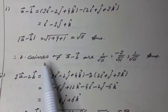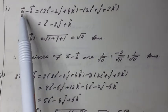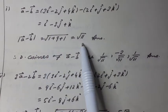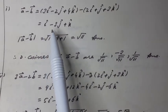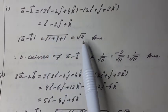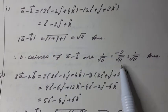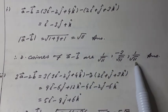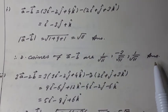Therefore, the direction cosines of a vector minus b vector are: 1/√11, −3/√11, 1/√11. Answer.